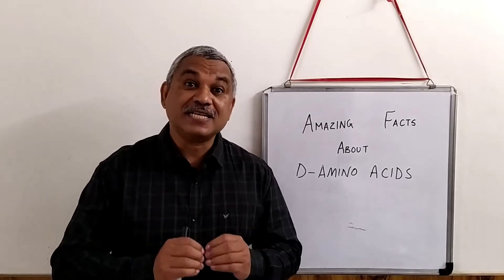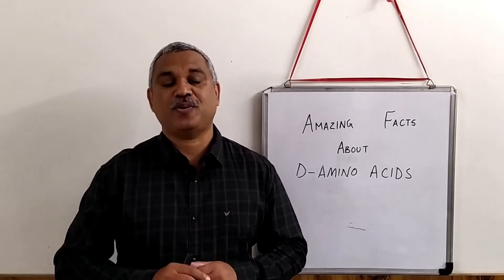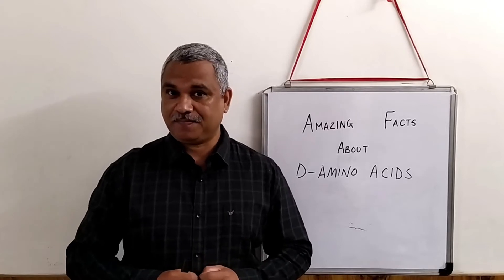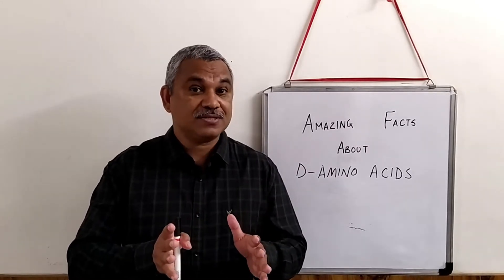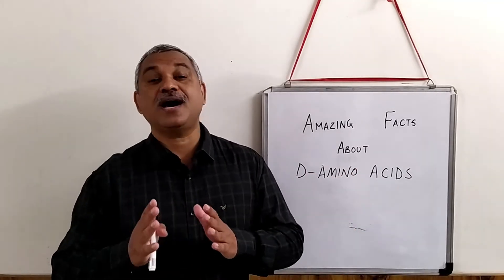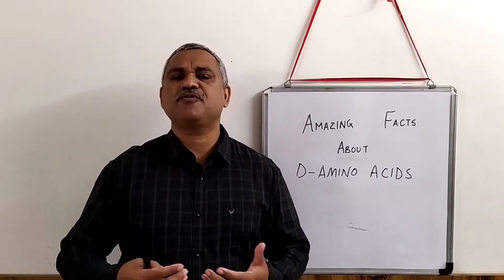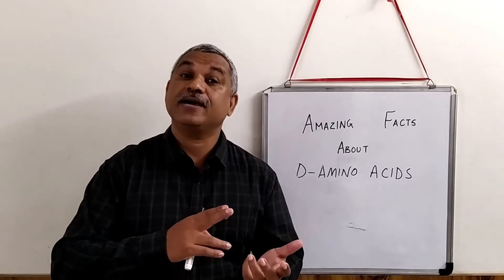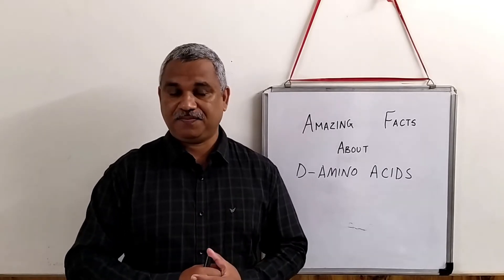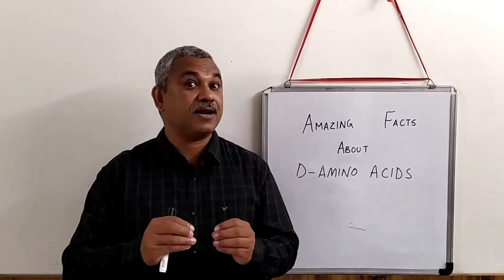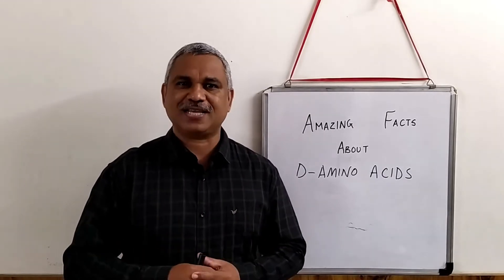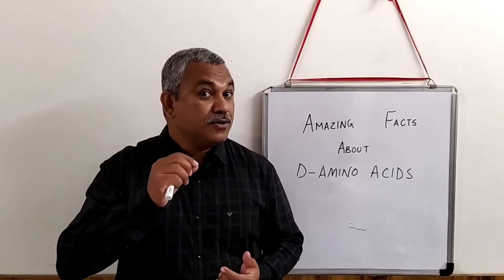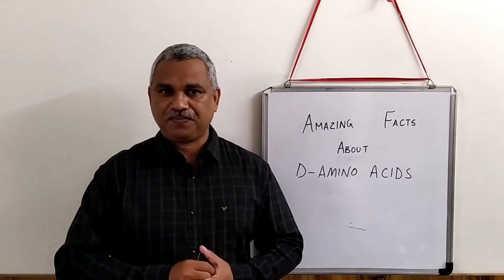This is a video about fascinating facts about amino acids. Amino acids are biomolecules having an amino group as well as a carboxyl end. Amino acids have a variety of functions - they are methylated agents, universally present, and are part of several significant metabolic pathways like the TCA cycle and the urea cycle.